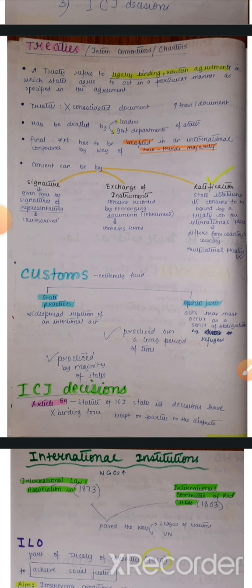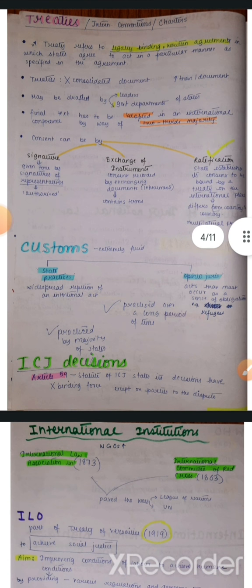A treaty can be consented to by three ways. First, by signature — in certain cases, treaties can be given force by way of signatures of representatives. Representatives, like IFS officers, are authorized by our state and able to take decisions on our behalf. Unke signatures se bhi hum treaty ko accept kar sakte hain.